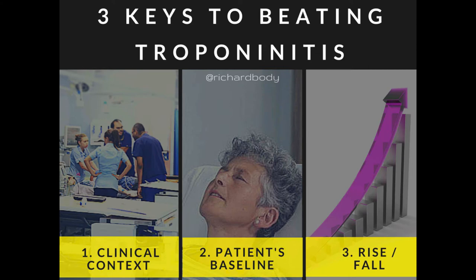I think it's quite easy. We only need to remember three simple things, and I'm going to take you through each of these in turn. That'll help us differentiate patients with a positive troponin caused by acute MI from those who have a positive troponin for other reasons. Those three things are: interpret the clinical context — what's happening to the patient, what have they come in with; interpret the patient's baseline so we can consider what might be a normal troponin for that patient when healthy; and third, look for the rise or fall of troponin.